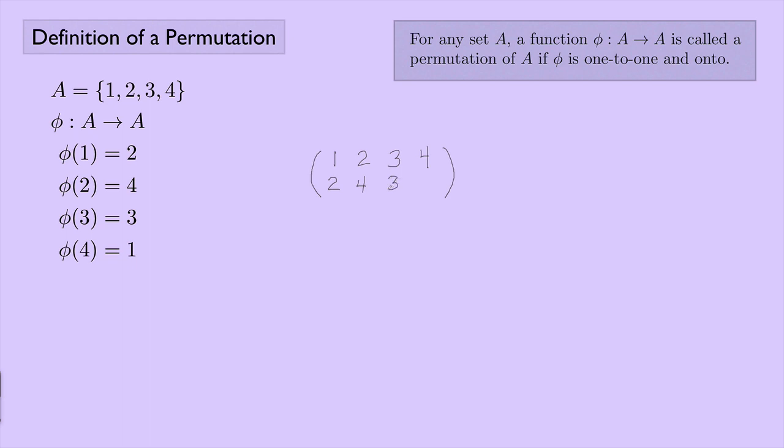And then we see that phi of 2 is mapped to 4. So underneath the 2 I'm going to write a 4. And then phi of 3 is 3. So underneath the 3 I'm just going to write another 3. And then phi of 4 is 1. So underneath the 4 I'm going to write a 1. So this is a way of representing phi. This is a shorthand for this permutation.